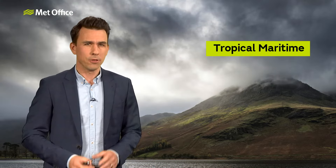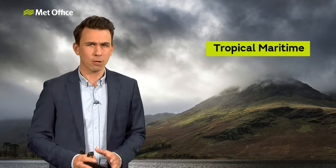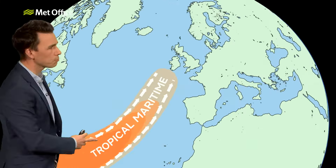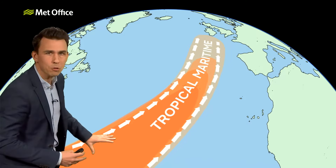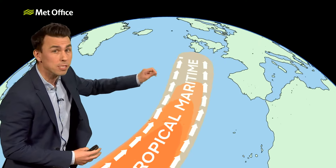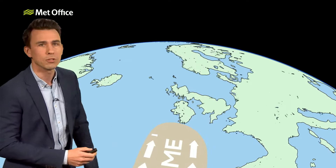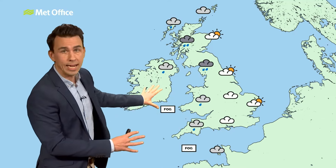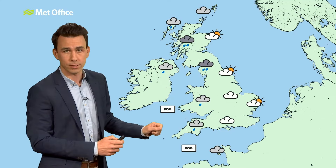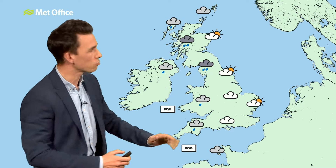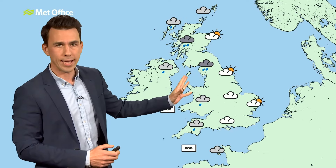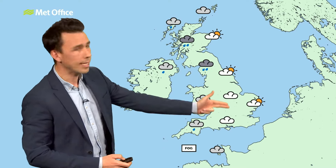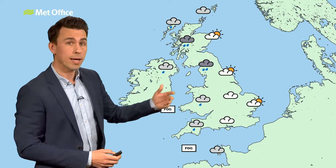Tropical maritime. The tropical maritime air mass is often dull, damp and mild. It actually starts in the tropics or the subtropics where it's warm and humid. But the southwesterlies that bring tropical maritime air to the UK pass over cooler seas en route. When humid air close to the sea cools, it becomes saturated, resulting in thick low cloud, sea fog and drizzle. Even more moisture is wrung out over the higher ground in the west, leading to persistent rain over western hills, whilst a rain shadow to the east leads to drier and milder weather there.